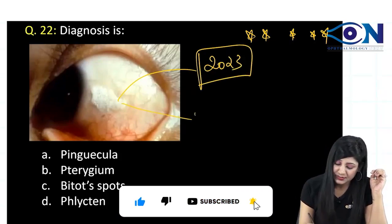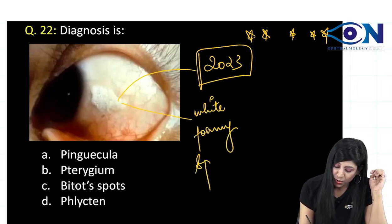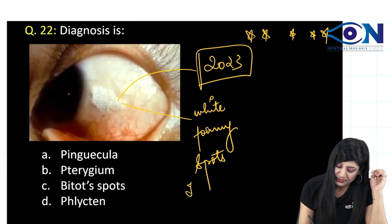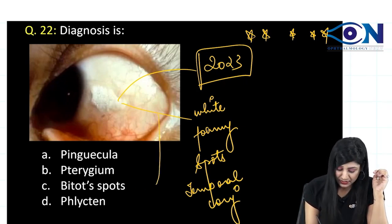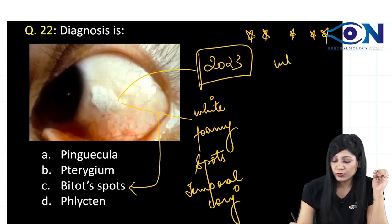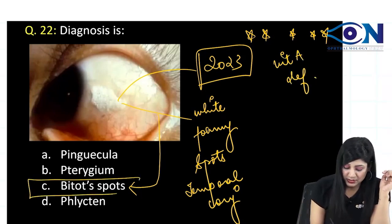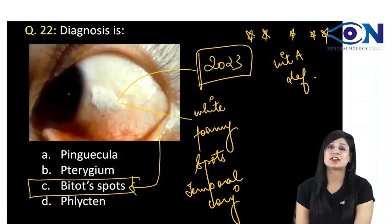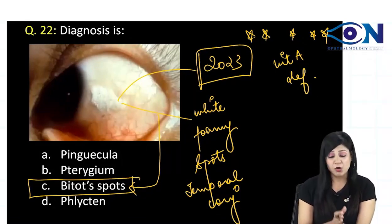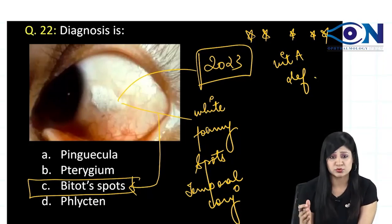You can see these are white, foamy spots which are actually present in the temporal conjunctiva. White foamy spots present on the temporal conjunctiva — these are the Bitot spots, and these are present in vitamin A deficiency. So there is no confusion regarding this. When I teach the conjunctiva and the degenerative conditions, along with pinguecula and pterygium, I have shown you the Bitot spots so that there is no confusion.